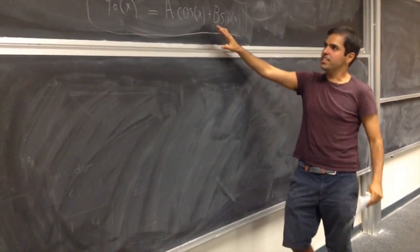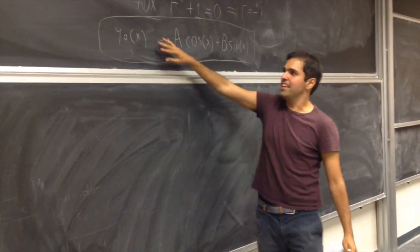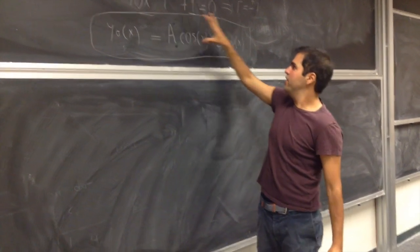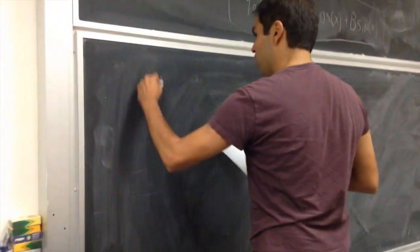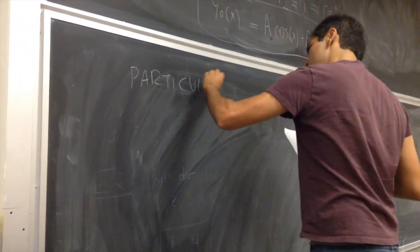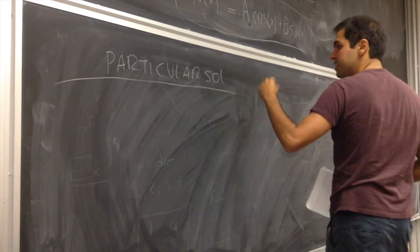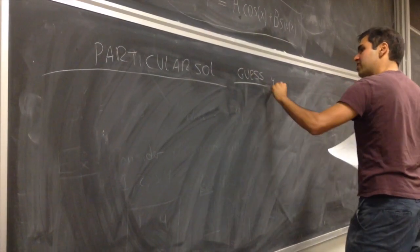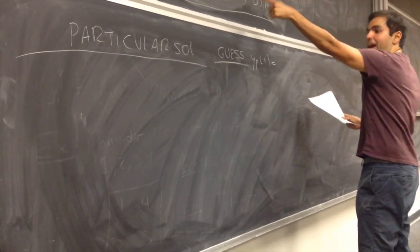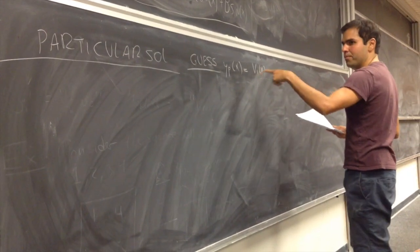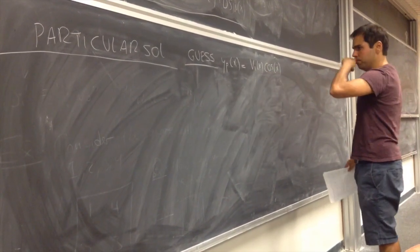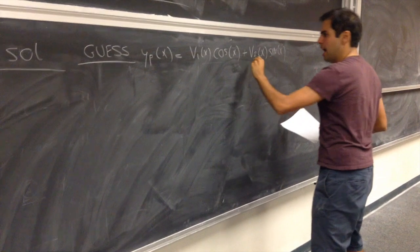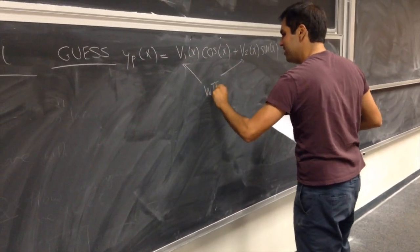That's the homogeneous solution, and it's very crucial for the method of variation of parameters. What does the variation of parameters method say? Just guess the same form of the solution, except instead of having constants a and b, you have functions — call them v1 and v2. So for the particular solution, guess that y_p equals v1(x)·cosine(x) plus v2(x)·sine(x). We want to find v1 and v2.